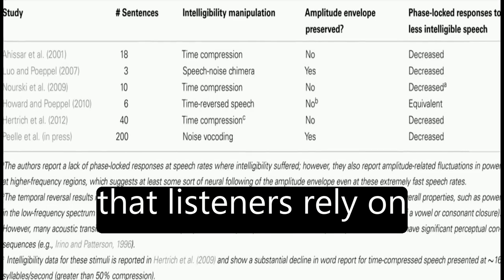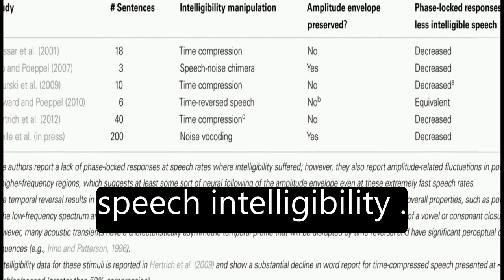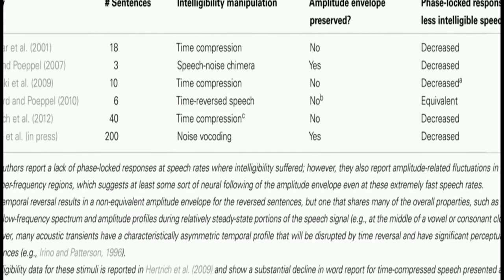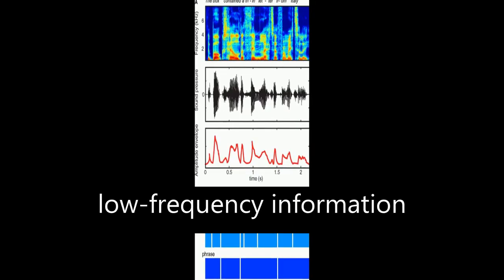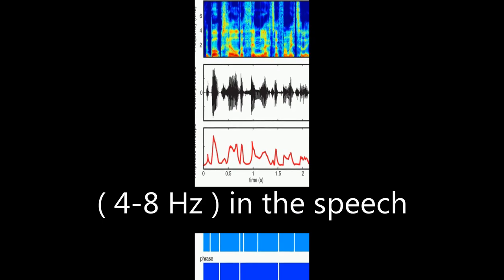Behavioral studies show that listeners rely on this information for speech intelligibility. Neuroimaging data suggests that phase locking by ongoing cortical oscillations to low-frequency information, 4 to 8 Hz,